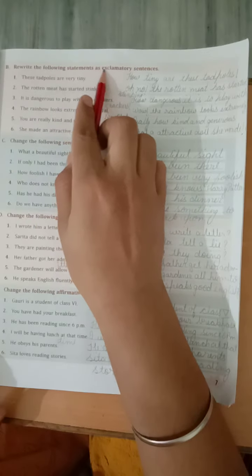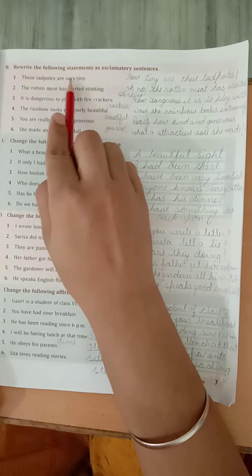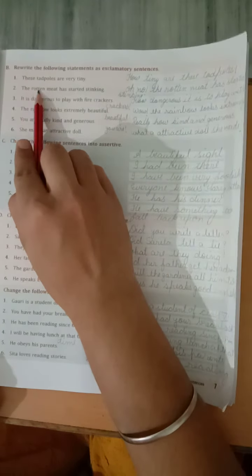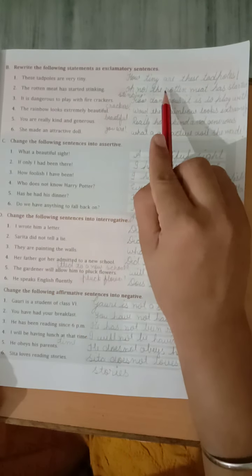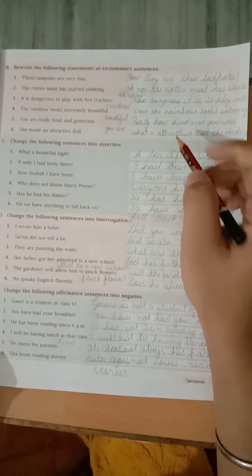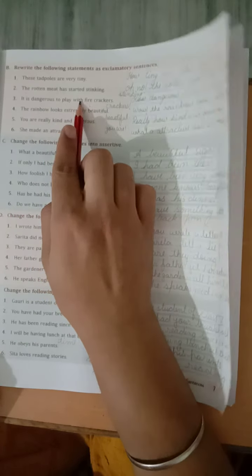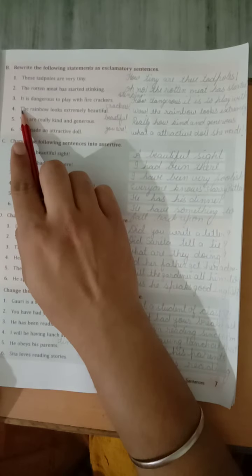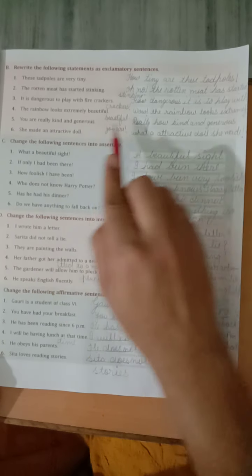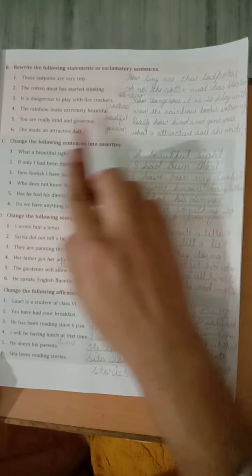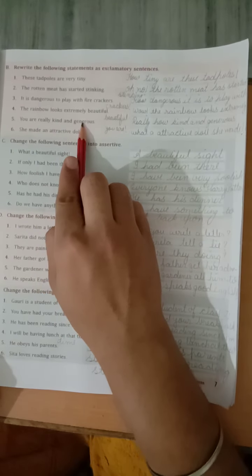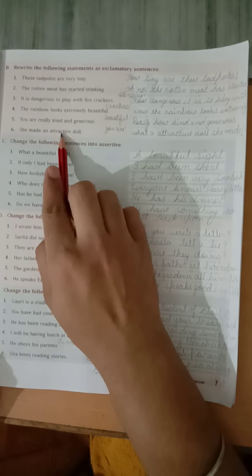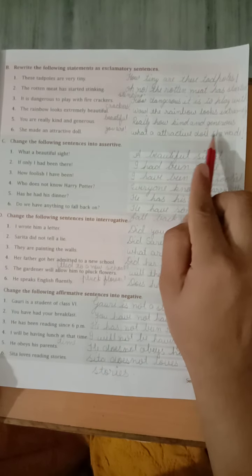Third one. Rewrite the following statements as exclamatory sentences. These tadpoles are very tiny. How tiny are these tadpoles! Exclamation sign. The rotten meat has started stinking. Oh no, the rotten meat has started stinking, ok? It is dangerous to play with firecrackers. How dangerous it is to play with crackers. The rainbow looks extremely beautiful. Wow, the rainbow looks extremely beautiful. You are really kind and genius. Really, how kind and genius you are. She made an attractive doll. What an attractive doll she made.